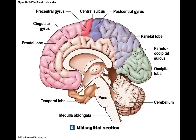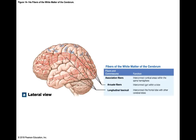Deep to the cortex is the cerebral white matter containing axons divided into fiber groups. The first group are association fibers, which connect the cortex within one hemisphere. Short ones are called arcuate fibers, and longer ones are called longitudinal fibers — which may extend from the back to the front of the same hemisphere.